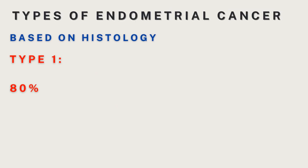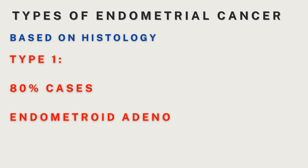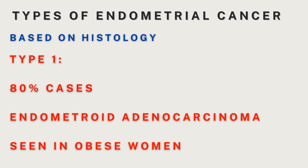Here we begin with our discussion on types of endometrial cancer based on histology. We have Type 1 and Type 2. Understanding the type will primarily help us in knowing the prognosis of the cancer, which will ultimately help us in deciding the line of treatment. The most commonly seen histological type is endometrioid adenocarcinoma. We also have other types such as mucinous, clear cell, serous, and squamous type, which is very rarely seen.